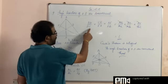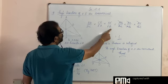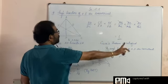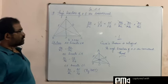That's what we got here. BD by DC into CE by EA into AF by FB is equal to 1. So because Ceva's theorem is satisfied, the angle bisectors are concurrent.